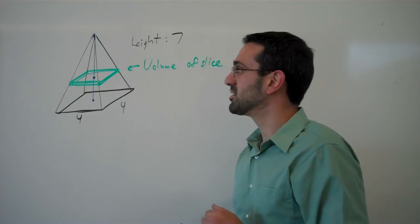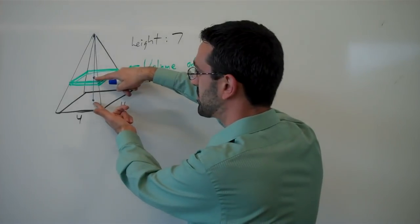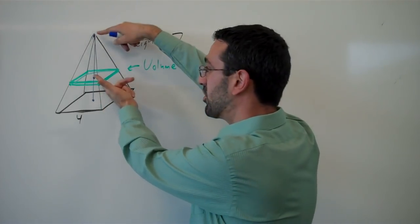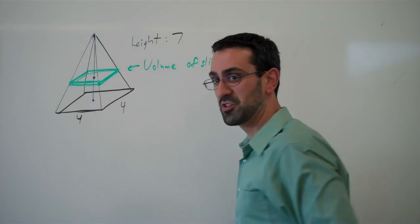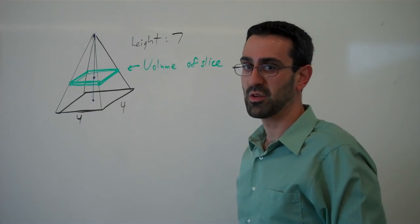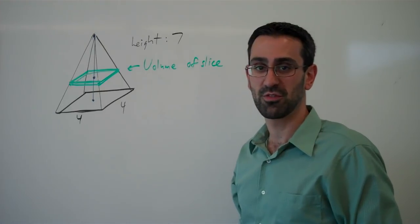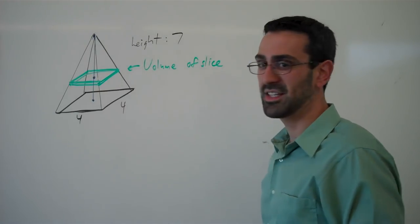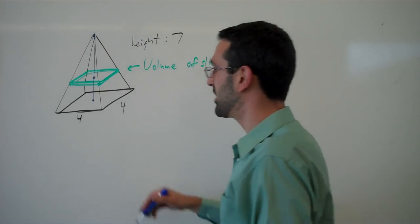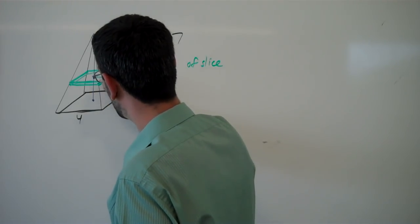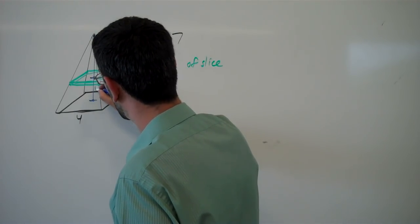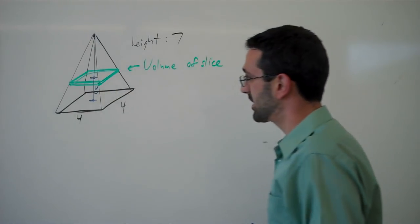Now we have an option. We can either introduce the variable as the measurement from the bottom or we can introduce our variable as the measurement from the top. Either one works just fine. It actually is easier here to measure from the top but I think it's a little more natural to measure from the bottom. So let's go ahead and call this distance here. Let's call this distance y.